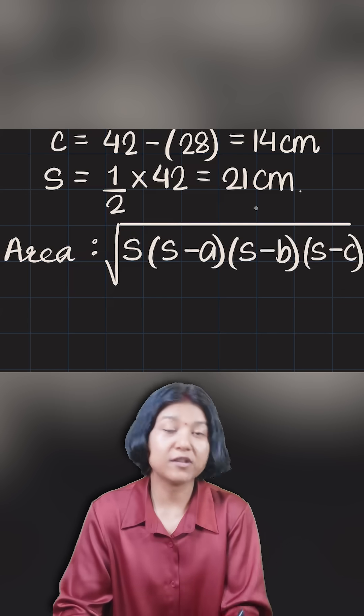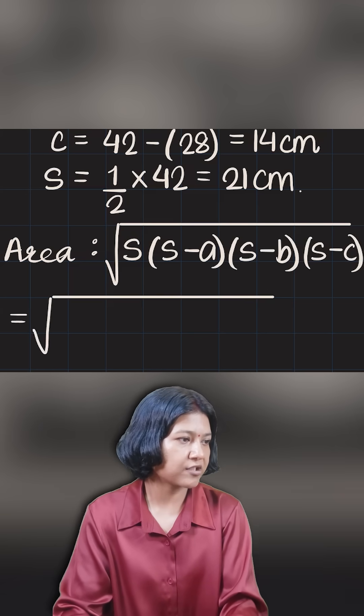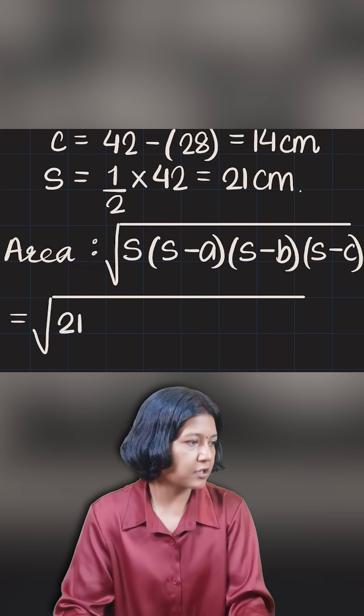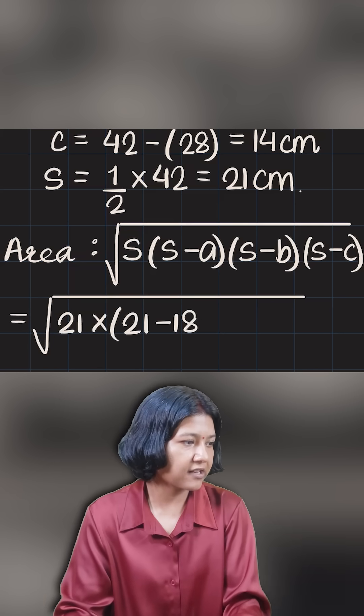Because I got my semi-perimeter as 21, I'm gonna put 21 times 21 minus the first side. 21 minus 18 was the first side, 21 minus 10 and the third side is 21 minus 14.